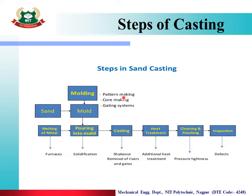The steps include: sand preparation, pattern making, core making, and setting up the gating system. After that, we prepare the mold cavity — the sand impression of the object — using the pattern, core, and gating system. These steps are performed one by one to complete the mold preparation process.